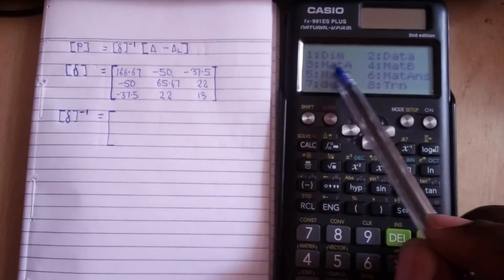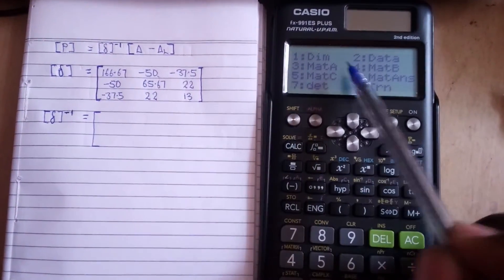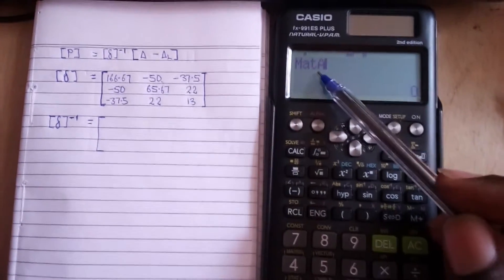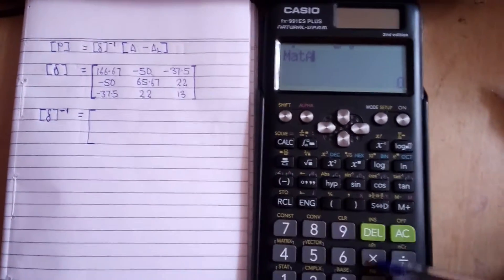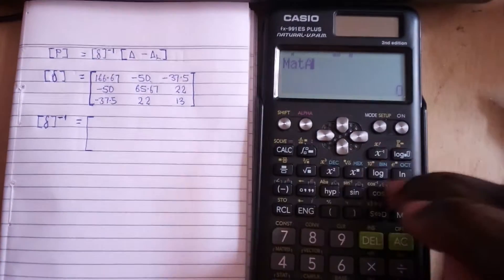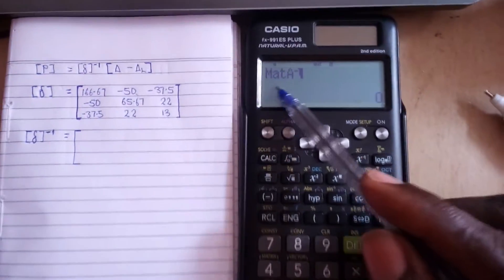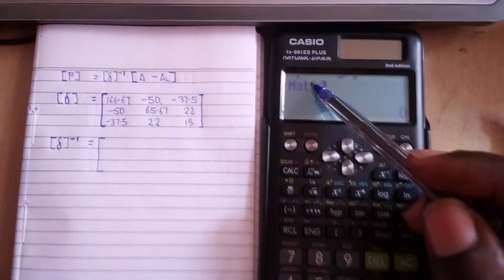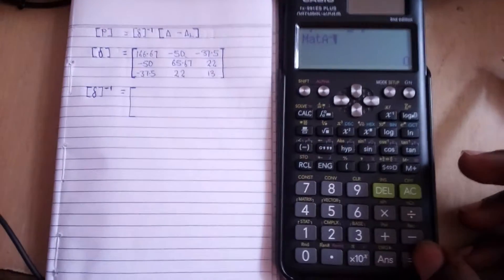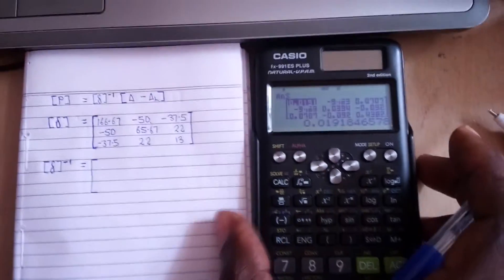We have to call out matrix A because we stored our data in matrix A. That's number 3, so you press 3. Are we multiplying, adding, dividing, or subtracting? No, none of this. We are doing inverse, so you just press this button. We need inverse of matrix A, so once you press that button, you press equal to and the answer will come out.